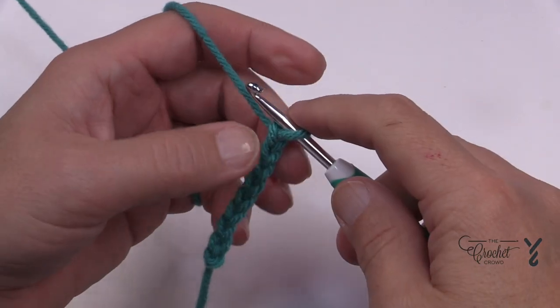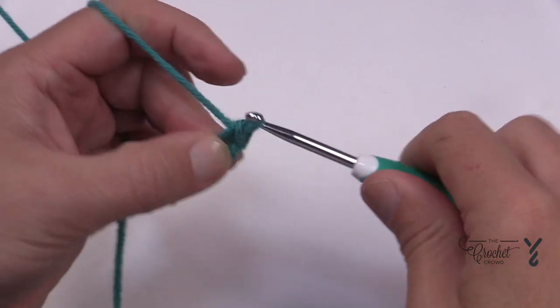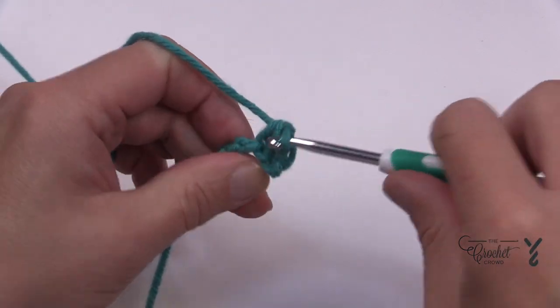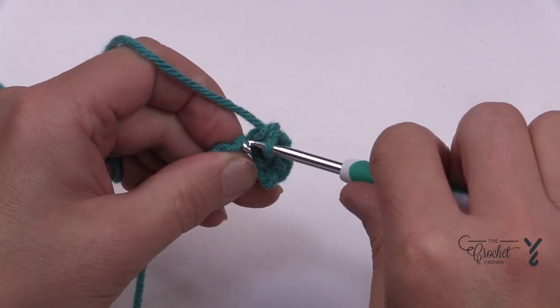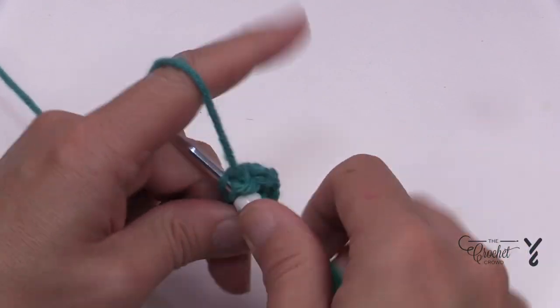In row number one second chain from the hook turn it to the back hump of the chain because it'll look nicer and you're just going to single crochet yourself all the way down to the other side. There will be a total count of seven single crochets if that's important for you to know that. It's also on the pattern so I'm not being a rocket scientist I'm just reading.